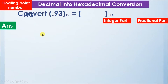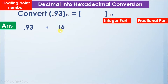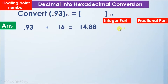We will take the number 0.93 and multiply it by 16, because the base of hexadecimal is 16. So we get the number 14.88. The integer part is 14 — or you can say E — and the fractional part is 0.88.